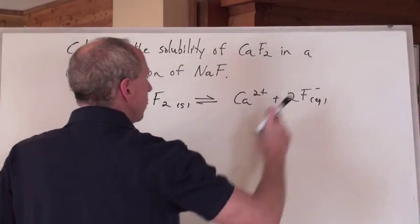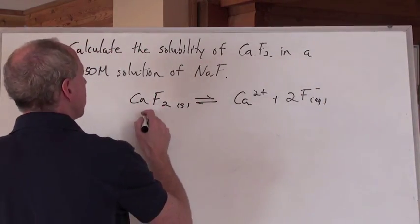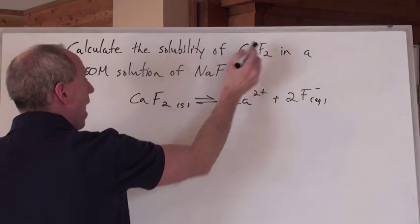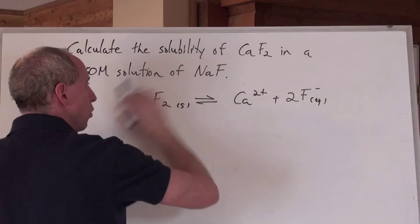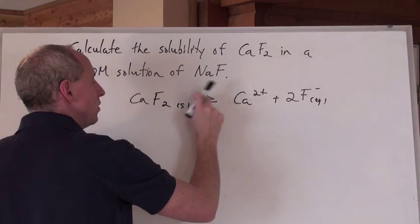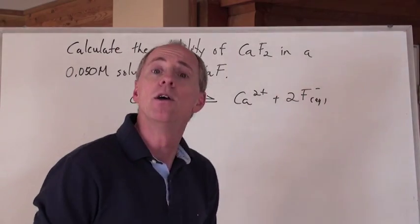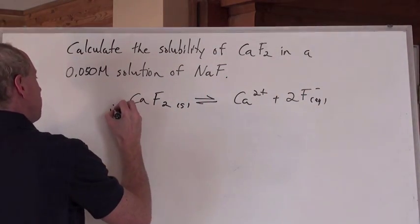Well, first of all, you write the equilibrium reaction here for CaF2 because that's the chemical under consideration. We're calculating the solubility of that, so this is the chemical under consideration. CaF2 is in equilibrium with the calcium ions and the fluoride ions. Now, what are we doing? ICE box always. Initial. Change. Equilibrium.